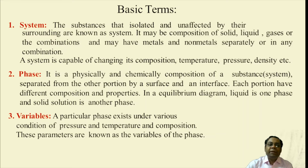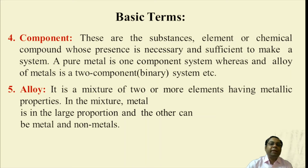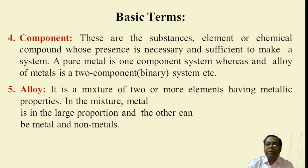The third term is variables. A particular phase exists under various conditions of pressure, temperature, and composition. These parameters are known as variables or phases. Next is component. These are the substances, elements, or chemical compounds whose presence is necessary and sufficient to make a system. A pure metal is a one-component system, whereas an alloy of two components is a binary component system.